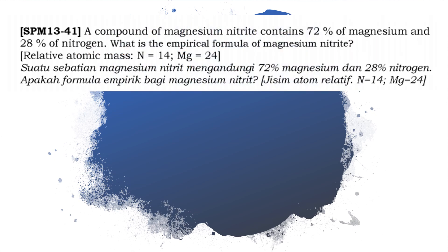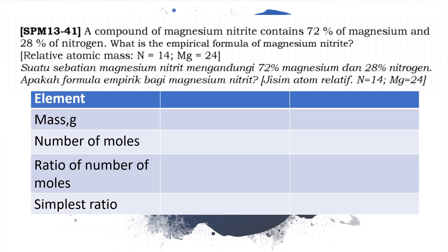For example: a compound of magnesium nitride contains 72% magnesium and 28% nitrogen. To solve this, draw a table with the elements magnesium and nitrogen. Assume the total mass is 100 g, so the mass of magnesium is 72 g and the mass of nitrogen is 28 g. Calculate the number of moles: magnesium is 72 divided by 24, and nitrogen is 28 divided by 14.